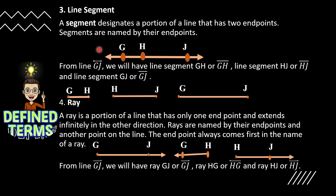Number four, we have the definition of ray. A ray is a portion of a line that has only one endpoint and extends infinitely in the other direction. Rays are named by their endpoint and another point on the line, with the endpoint always coming first. From line GJ, we will have ray GJ, ray HG, and ray HJ.